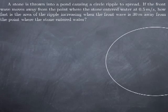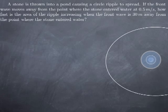So here is a pond — we throw a stone into the water, and here is the point of entry into the water. And we get a circular ripple to spread.